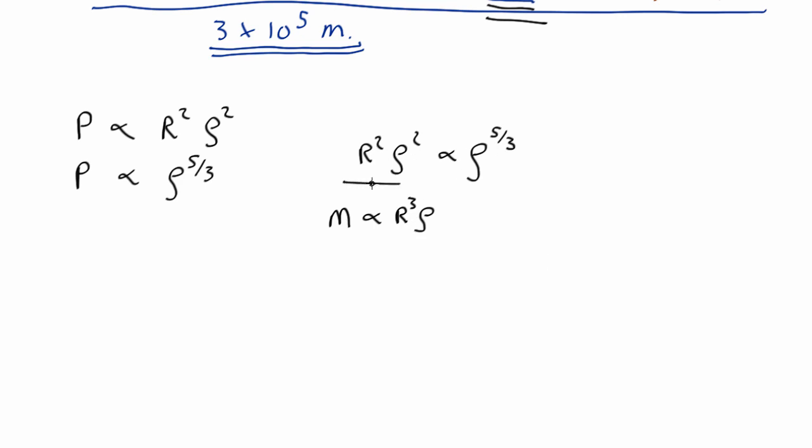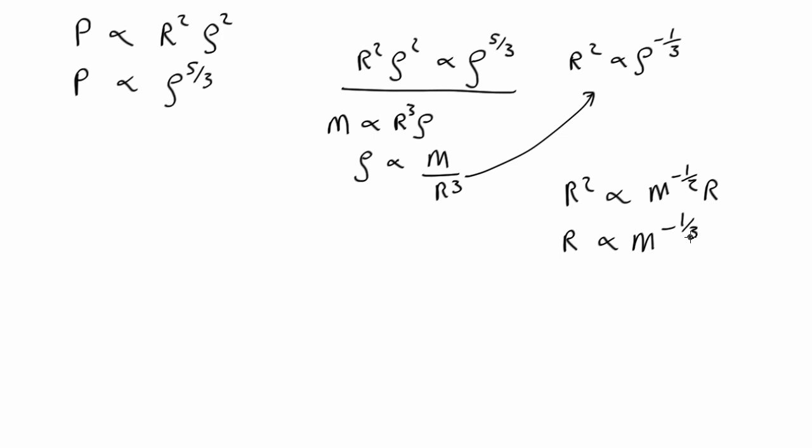Okay, so let's combine these. Let's rearrange that. We get that r squared is proportional to rho to the five-thirds minus two, which is rho to the minus one-third. And from this, we know that rho is proportional to m over r cubed. So plug this in here, we end up with r squared proportional to m to the minus one-third and r to the third times minus one-third, which is just r, so we end up with r proportional to m to the minus one-third.